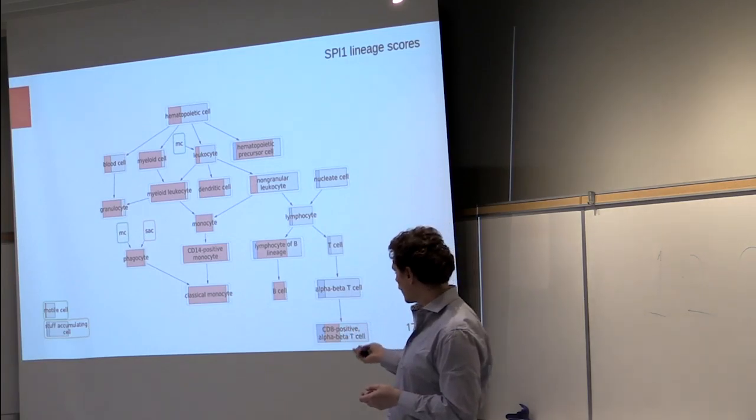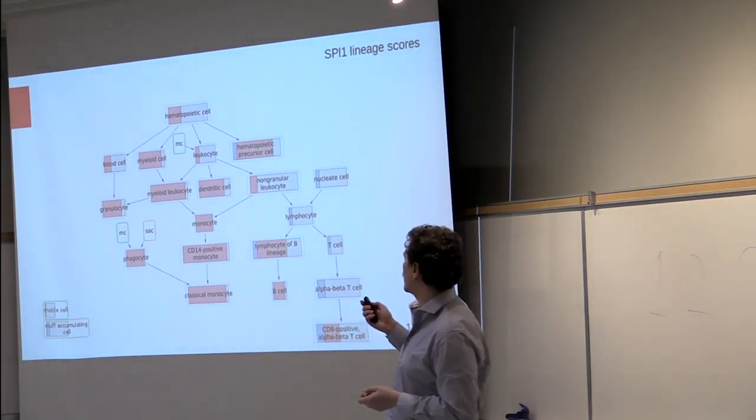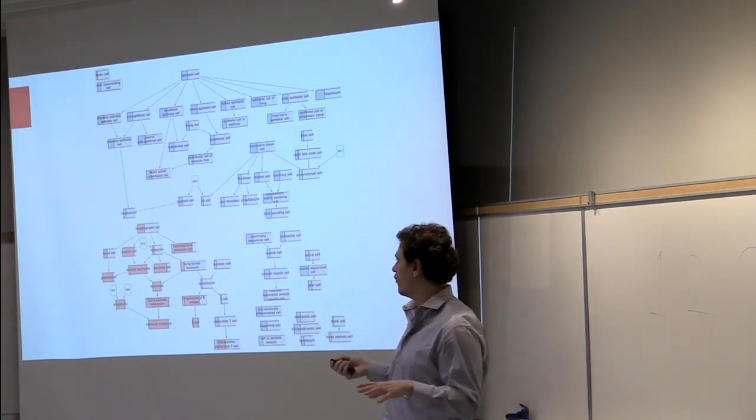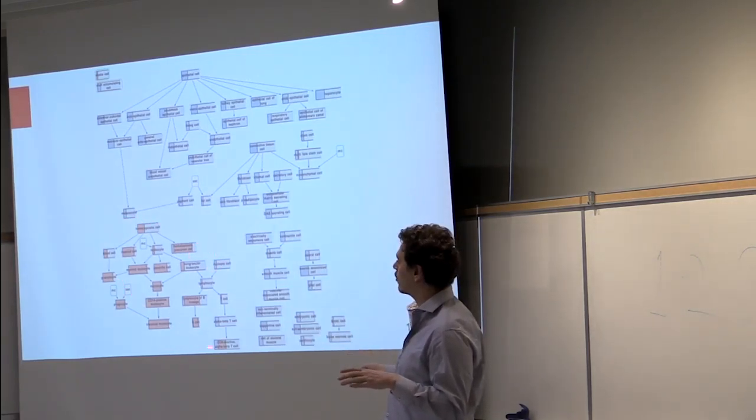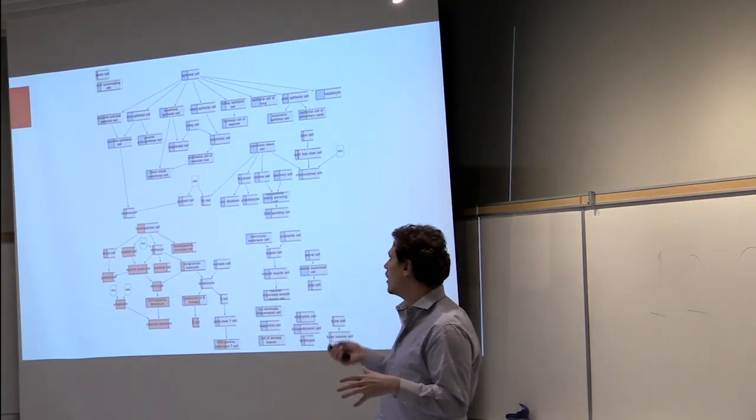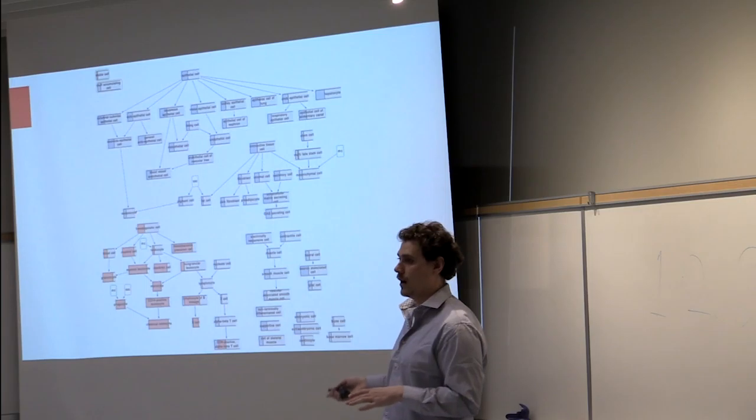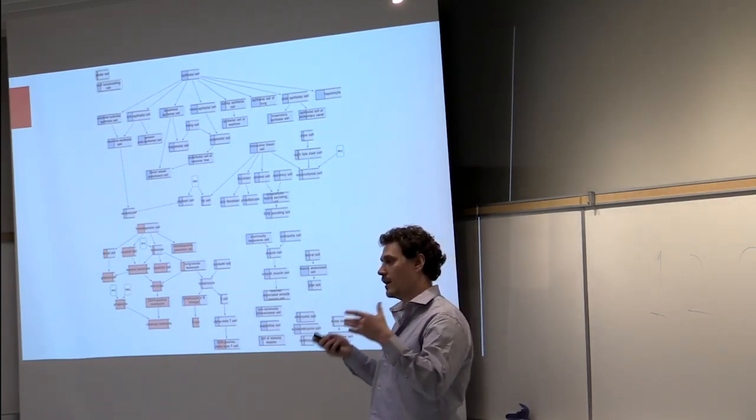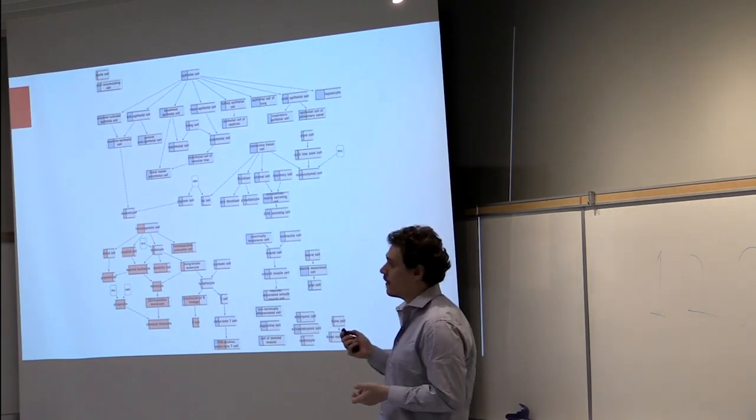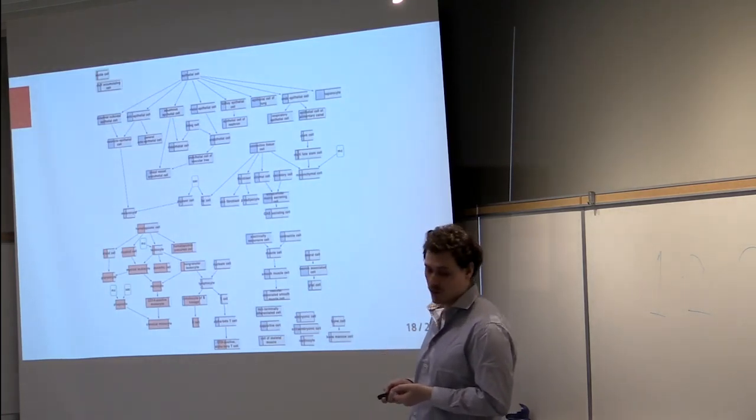If we zoom out and look at the whole cell ontology, we can confirm that this gene is almost exclusively expressed in the hematopoietic cell lineage and not in any other lineage. So we can conclude that we basically identified that this gene was specific to this cell type and to this lineage, and we confirmed that with the literature.